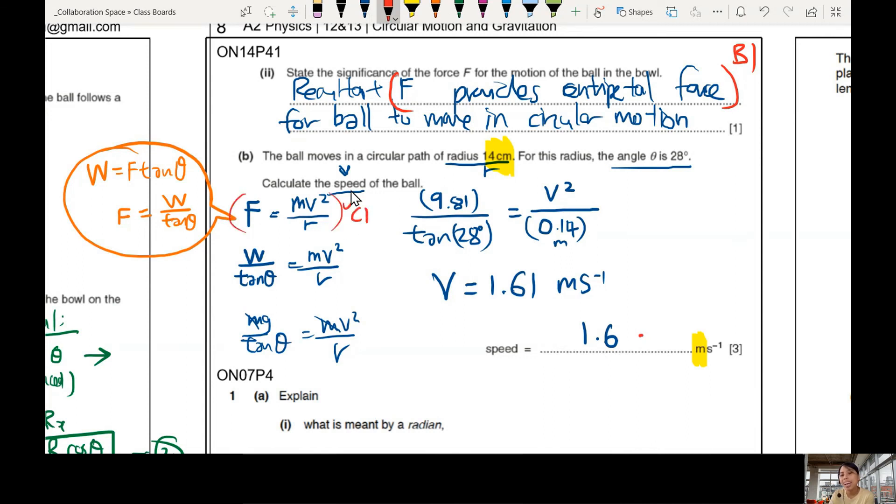Centripetal force, which is the resultant, is MV square over R. Then, if you go sub in the correct values, then correct. 9.81, 28, and 0.14 meters. And lastly, final answer, A. 1. A for accuracy.